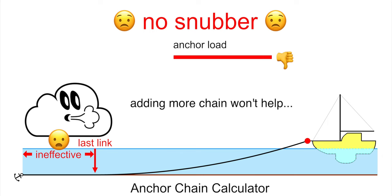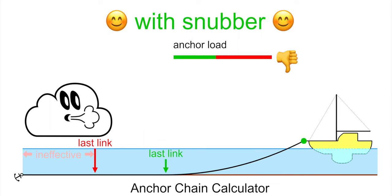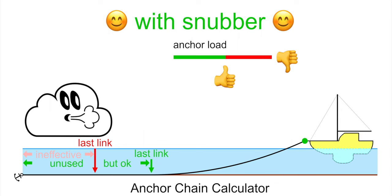Hence, simply paying out more chain won't help a bit. If we now add a very elastic snubber, the anchor load gets halved.